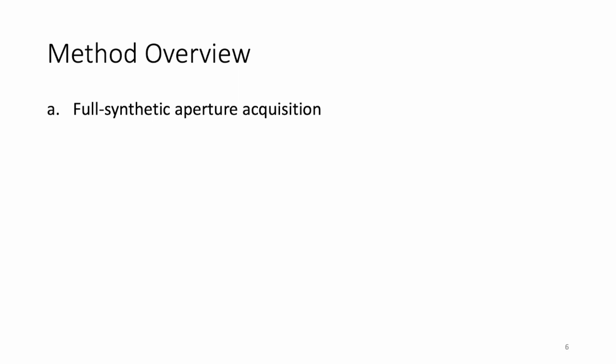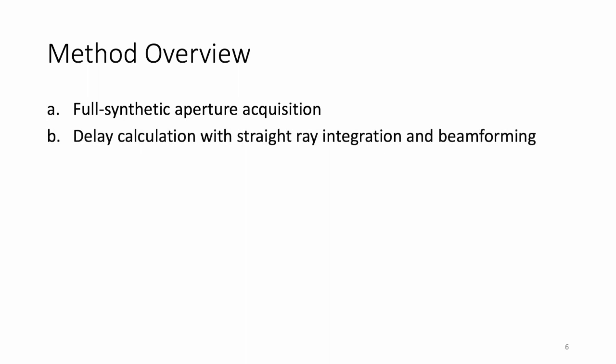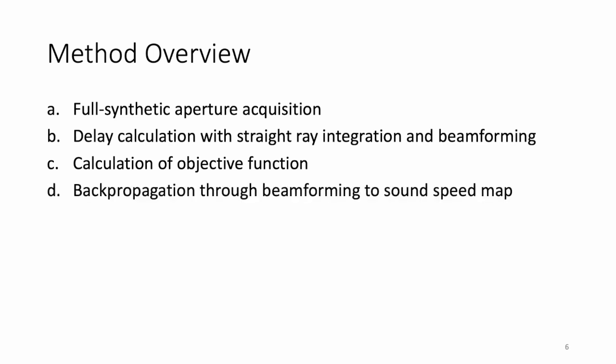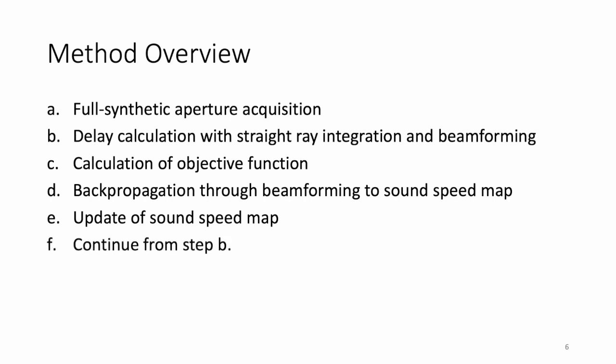Our method begins with a full-synthetic aperture acquisition of radiofrequency ultrasound data. We then perform a delay calculation with straight-ray integration to all points in the image and use these delays to perform beamforming. We calculate common midpoint phase error on a collection of sub-aperture images and back-propagate our gradients through the forward process to our sound speed map. We then update our sound speed map via gradient descent and repeat the process until convergence.